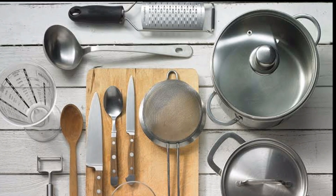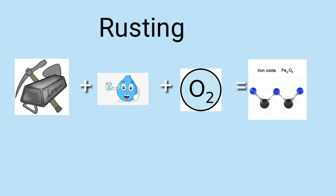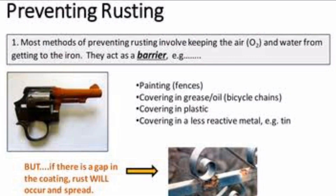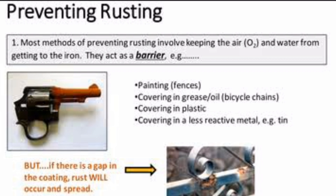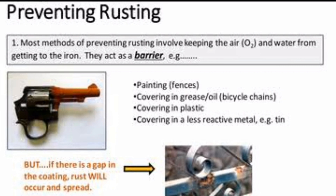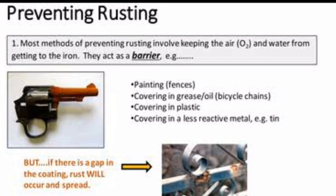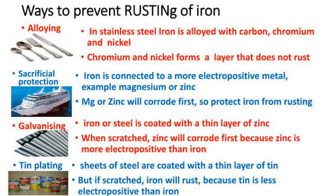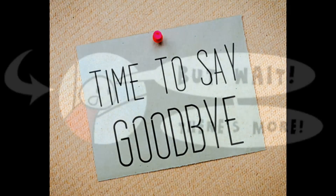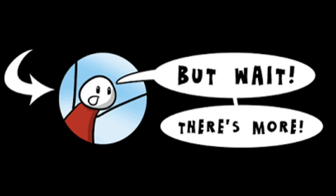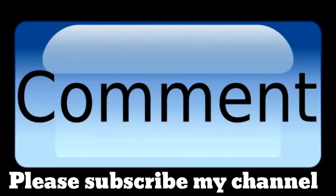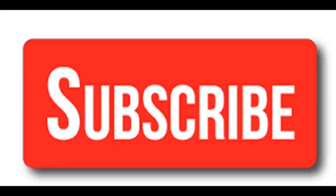From this video we can understand how rusting is formed in the presence of oxygen and moisture, and how it can be prevented. The main approach is the barrier method — painting or covering with plastic, oil, or grease. We also have alloy formation and galvanization methods. Hope you have understood rusting and its prevention. Please like and subscribe for more interesting videos.